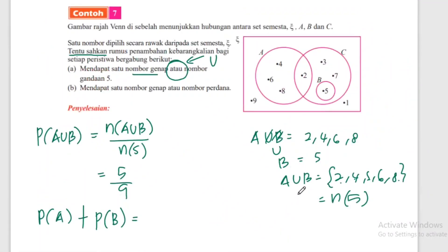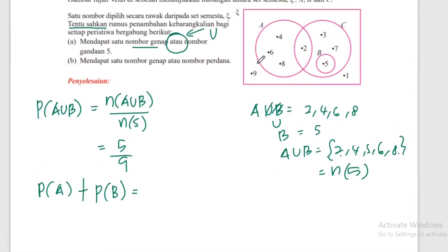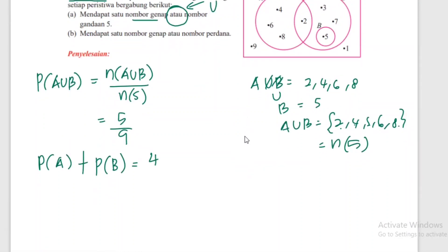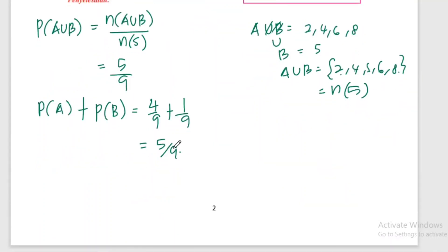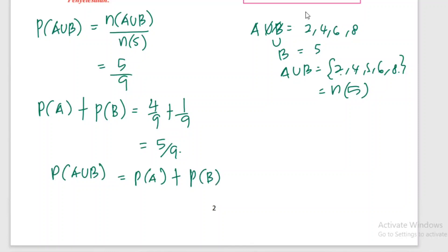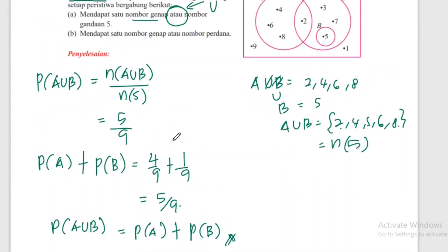Kita guna formula: kebarangkalian A tambah kebarangkalian B. A ada 4 unsur, jadi kebarangkalian A = 4/9. Tambah B ada 1 unsur, jadi kebarangkalian B = 1/9. Jumlah = 5/9. Terbukti - P(A union B) sama dengan kebarangkalian A tambah kebarangkalian B.